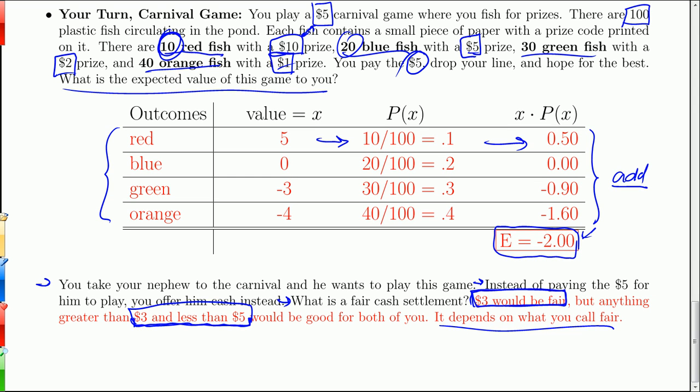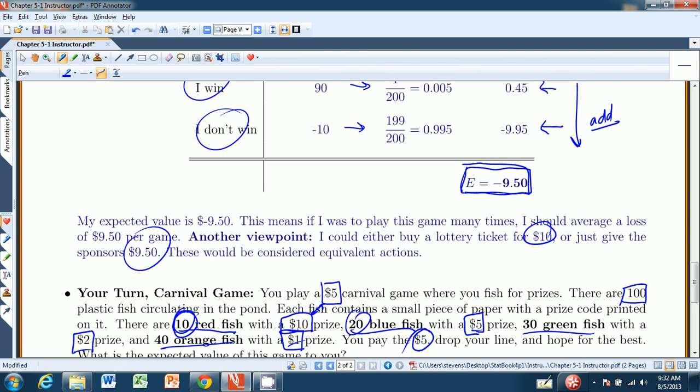That wraps up chapter 5.1 for discrete probability distributions. I will catch up with you in chapter 5.2 where we work on the binomial probability distribution. Bye.